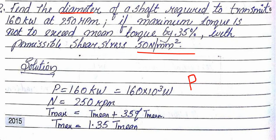The power equation is P = 2πNT/60. So 160×10^3 watts = 2π × 250 × T / 60. Solving for T, we calculate the mean torque T_mean.